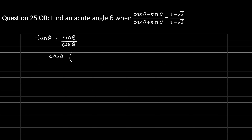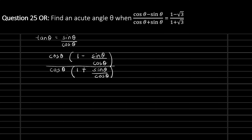Inside the brackets in the numerator we will have (1 minus sine theta upon cos theta), and in the denominator, taking cos theta common again, inside the brackets we will have (1 plus sine theta upon cos theta), which equals (1 minus root 3) upon (1 plus root 3).